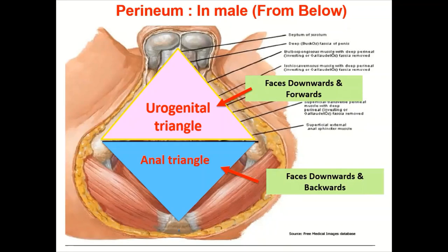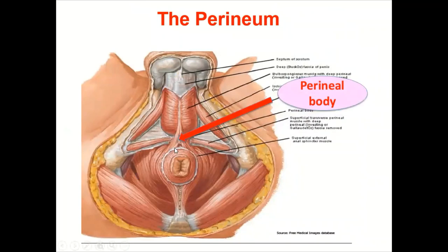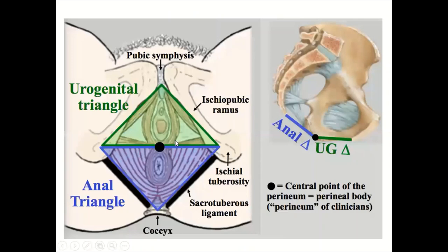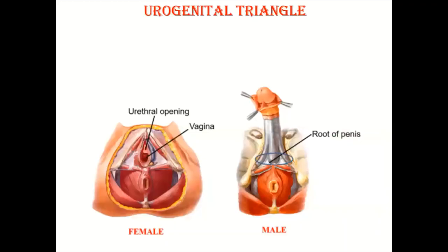In the center of the perineum is a muscular structure called the perineal body, which is very important for supporting the pelvic organs. When the patient is in lithotomy position — lying down with knees and hip flexed — you can see the urogenital and anal triangles. Anteroinferiorly is the urogenital triangle and posteroinferiorly is the anal triangle. The central point of the perineum is called the perineal body, also known clinically as the gynecological perineum.